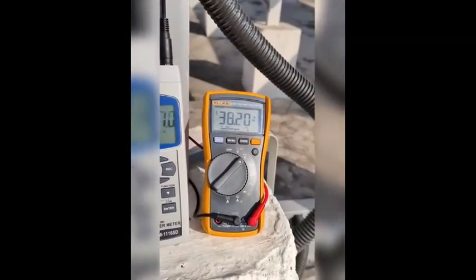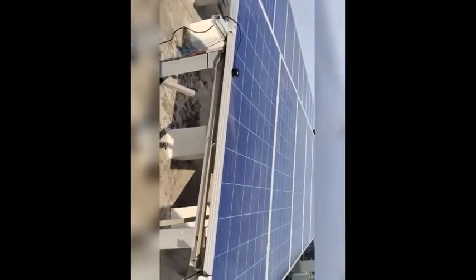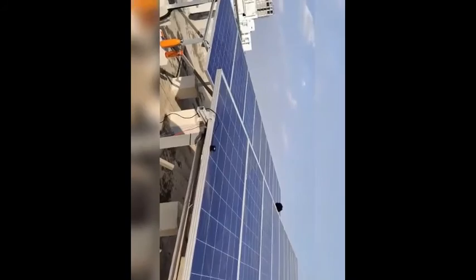The test module was connected to one of the panels and the test was executed at an irradiance of 470 Watt per meter square and at a temperature of 27.8 degrees Celsius. The panel, which is operating in a healthy mode, delivered a voltage of 38 volts.